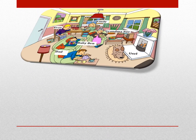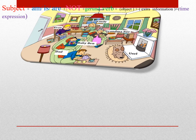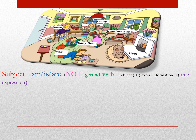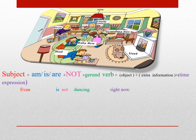طبیعتاً شما میخواد یه سری جملات منفی هم بگید. مثلاً من همین الان دارم نماز نمیخونم، من همین الان دارم نهار نمیخورم، فلانی همین الان داره کار نمیکنه. خیلی ساده، قسمتی که Am، Is یا Are میارید بعدش not میذارید. پس ساختار میشه: Subject + Am/Is/Are + not + Gerund Verb + Object + Extra Information + Time Expression که میتونن Optional باشن.